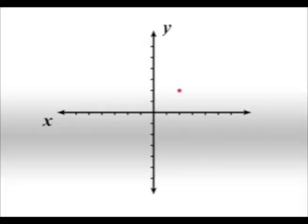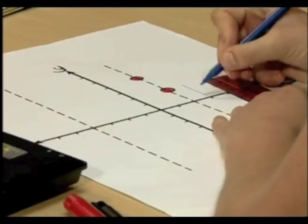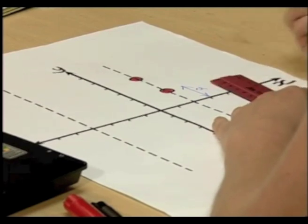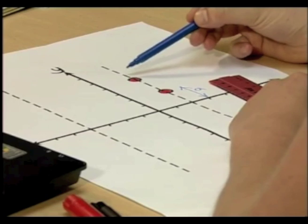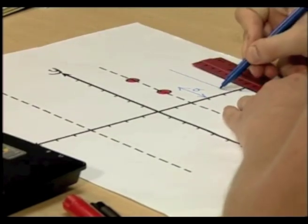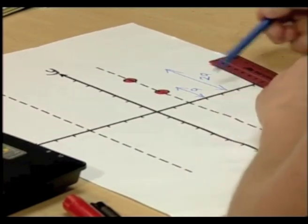Before we go to the graphing program, let me clarify something. I'll draw a set of axes and plot an arbitrary point. When we talk about stretching or compressing a function, focusing on a vertical stretch first, what we really mean is that the distance of the point on the function from the x-axis is changed by some scale factor. If the scale factor is 2, we start by measuring the distance from the x-axis — we call that distance a. The point will then move to a distance of 2 times a from the x-axis. That is called a stretch.